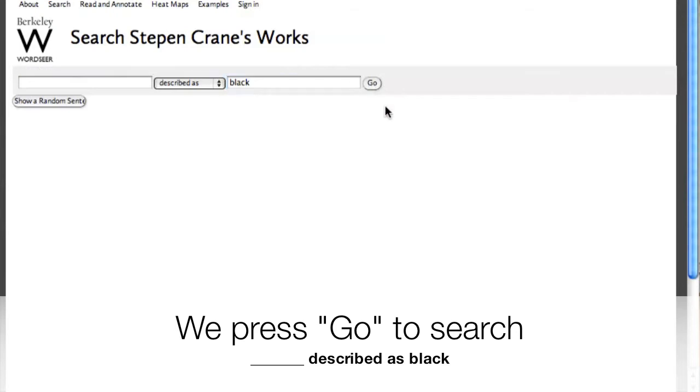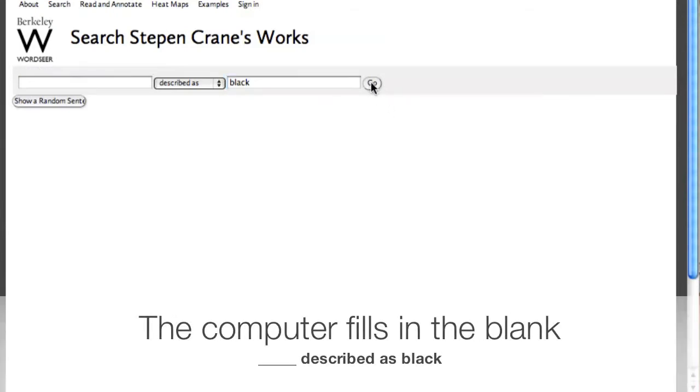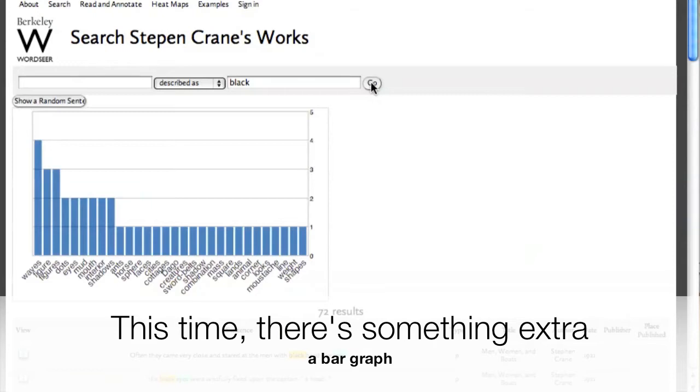For example, I can search for blank, described as black, which retrieves all the instances in the text of black being used as an adjective.